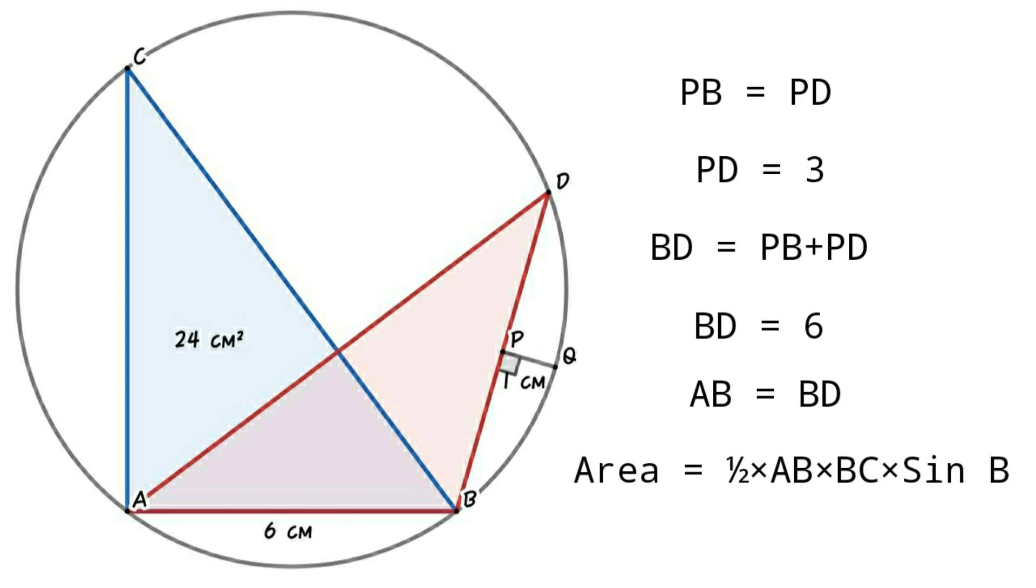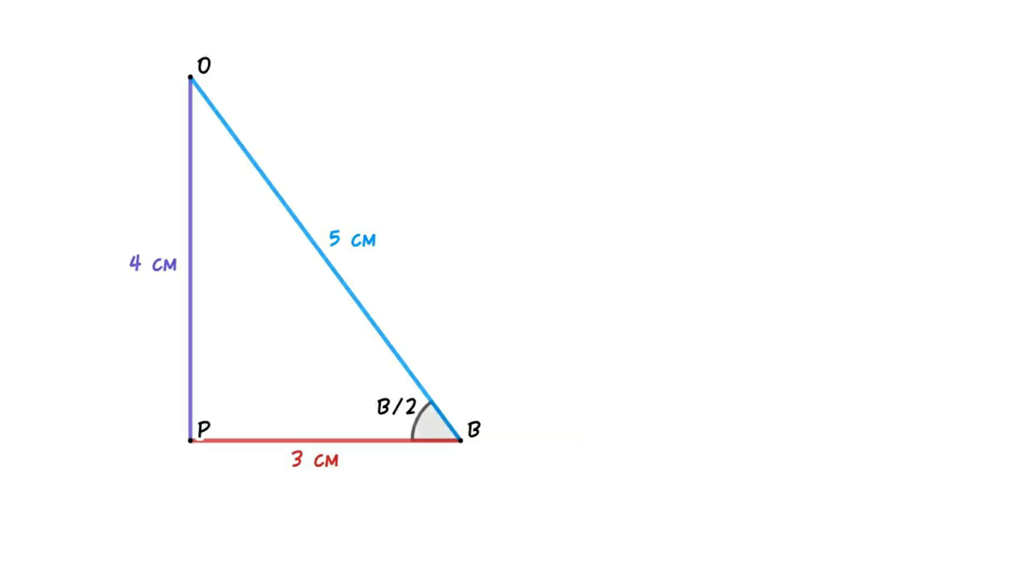So area of the triangle equals one-half times AB times BD times sin B. For finding sin B, consider triangle POB. Angle PBO equals B by 2, because OB bisects angle B. We know that sin B equals 2 times sin(B/2) times cos(B/2). From triangle POB we can find sin(B/2) equals 4/5 and cos(B/2) equals 3/5.